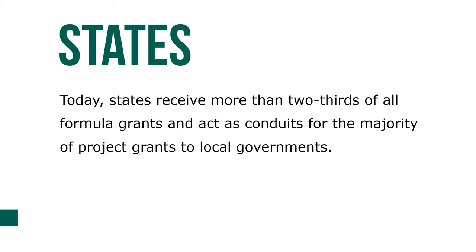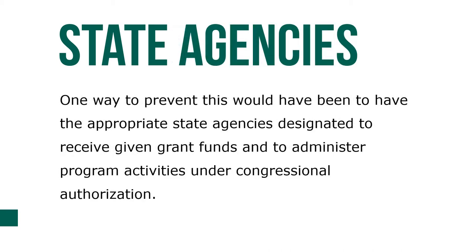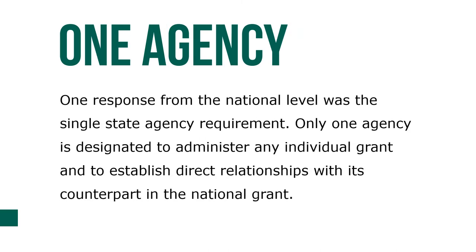As Congress deliberated over expansion of successive aid programs, their main concern was ensuring that national purposes were not lost by dividing administrative responsibility among fragmented state agencies. One way to prevent this would have been to designate state agencies to receive given grant funds and administer program activities under congressional authorization. One response from the national level was the single state agency requirement — only one agency is designated to administer any individual grant and to establish direct relationships with its counterpart at the national level.